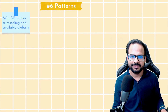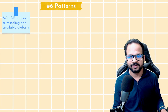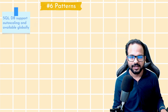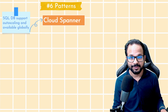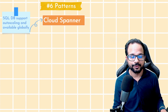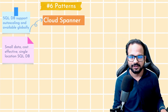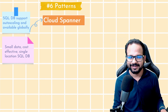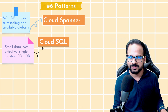If the question says SQL DB support, auto scaling, and available globally, then it should be Cloud Spanner, because Cloud SQL is for a single region only, doesn't support global locations, and doesn't support auto scaling. If it says small data, cost effective solution, single location, SQL DB, then Cloud SQL is the answer.